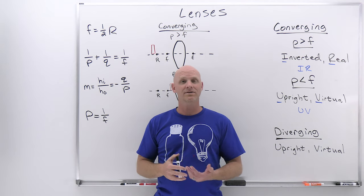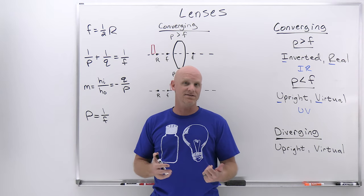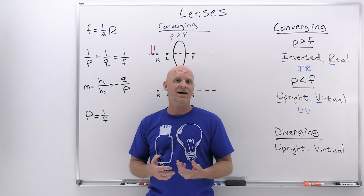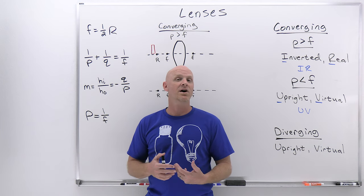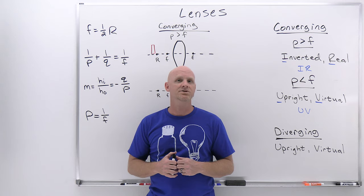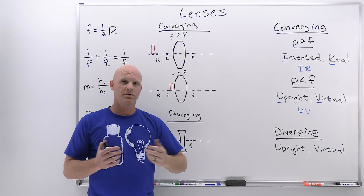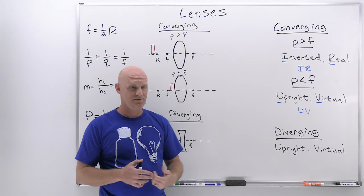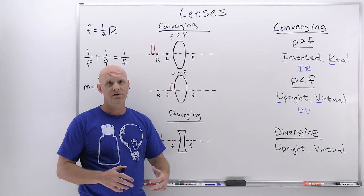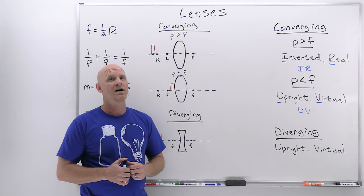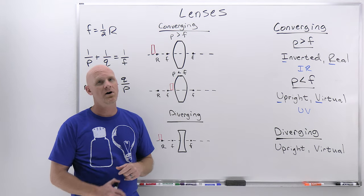Instead of concave and convex mirrors, we're going to have converging and diverging lenses. A converging lens is analogous to a concave mirror, and a diverging lens is analogous to a convex mirror. The diverging lens always causes light rays to diverge — they never converge onto a single point, so you never form a real image. You always get a virtual image, just like we saw with convex mirrors.